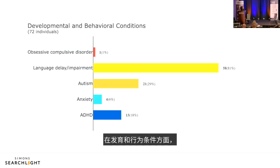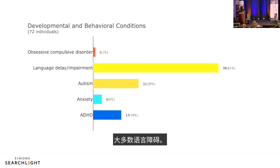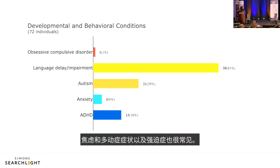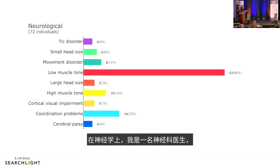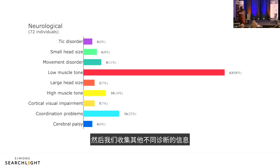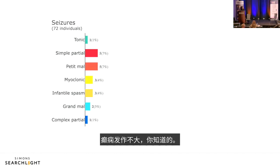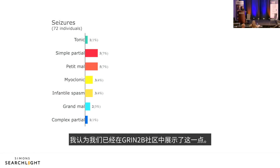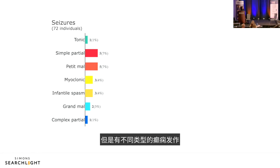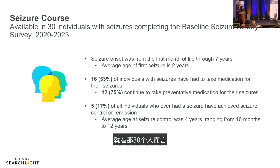In terms of developmental and behavioral conditions in GRIN2B: language delays and impairment are present in the majority; approximately 30% have an autism diagnosis; anxiety, ADHD symptoms, and OCD are also common. Neurologically, hypotonia is frequently diagnosed, along with coordination problems and cortical visual impairment. Seizures are not a prominent feature of GRIN2B — the epilepsy phenotype is not large.